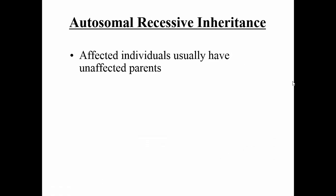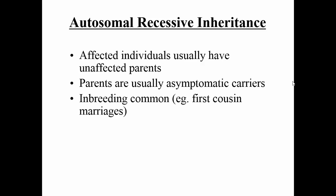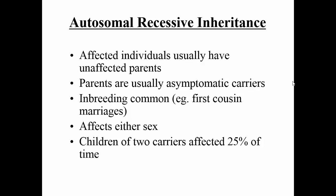To summarize, the hallmarks of autosomal recessive are: affected individuals usually have unaffected parents — the parents are carriers but you don't see the mutant phenotype. It's very common to see autosomal recessive inheritance persist in families where inbreeding is common, such as first cousin marriages — a very famous example being hemophilia in the royal family of England. They affect either sex. And the children of two carriers have a 25% chance of being affected.